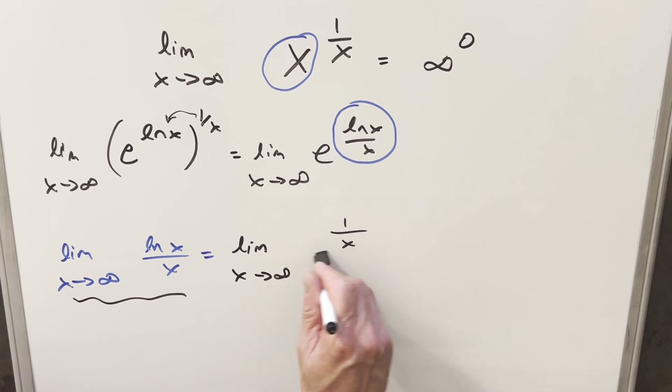But then from here, we can evaluate the limit as x goes to infinity of 1 over x. And this is clearly going to 0.